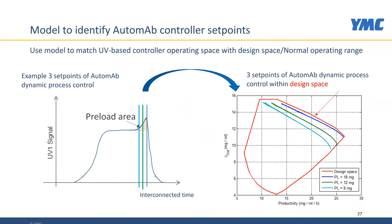Modeling can also help to identify the boundaries for our controller. We want to make sure the controller operates only within a certain defined design space. In the UV-based controller software, we can change the set points so the controller stays within the design space and delivers certain process attributes.